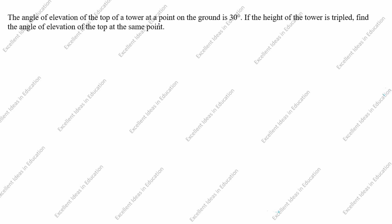Hi students, welcome to my channel Excellent Ideas in Education. Today we are going to solve this applications of trigonometry problem: the angle of elevation of the top of a tower at a point on the ground is 30 degrees. If the height of the tower is tripled, find the angle of elevation of the top at the same point.